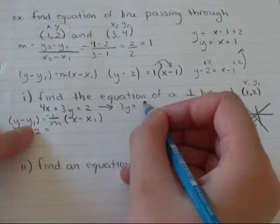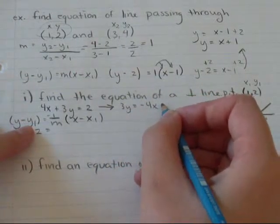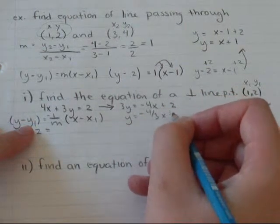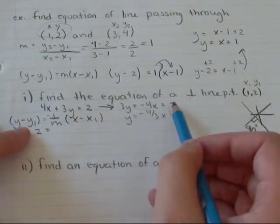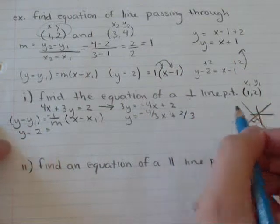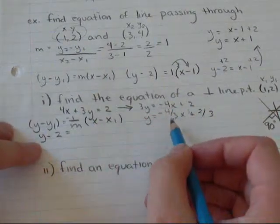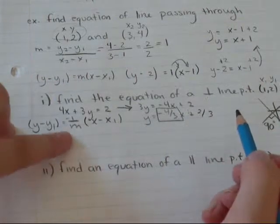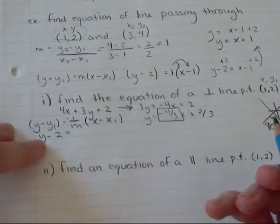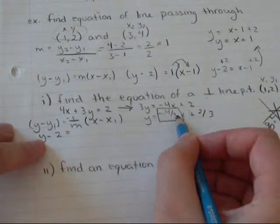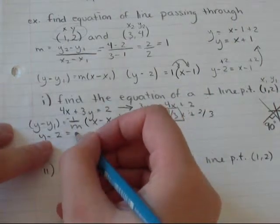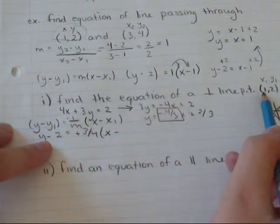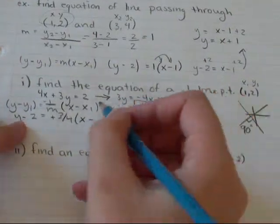y minus y1. y minus 2 equals the slope we're going to find by putting it into y-intercept form. 3y equals negative 4x plus 2. y equals negative 4 over 3x plus 2 over 3. The negative reciprocal of negative 4 over 3, it's negative times a negative. So, positive. We're going to flip this fraction. So, positive 3 over 4. x minus x1 is 1.